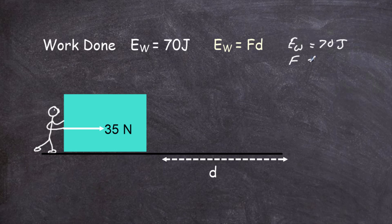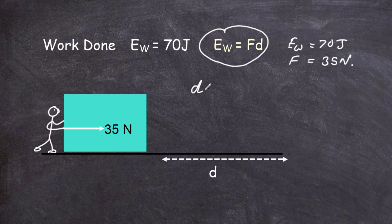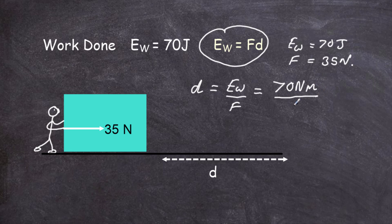We know EW is equal to 70 joules, and the force applied is 35 newtons throughout the push. So we rearrange the equation in terms of d. Distance d equals the work done divided by the force. Putting in the numbers: 70 joules — or 70 newton metres — divided by 35 newtons. The units cancel to give us metres, which is correct. So the distance the block must have moved was 70 divided by 35, which equals 2 metres. To transfer 70 joules, that force of 35 newtons moves the block through a distance of 2 metres.